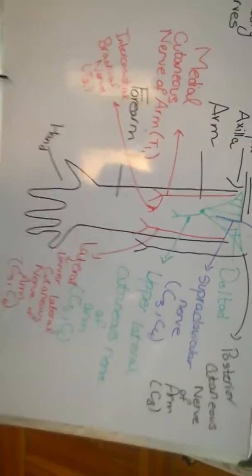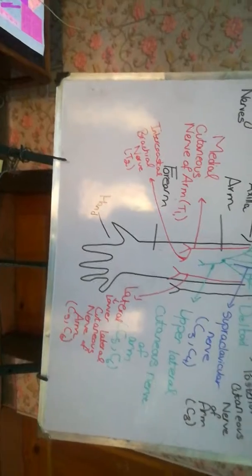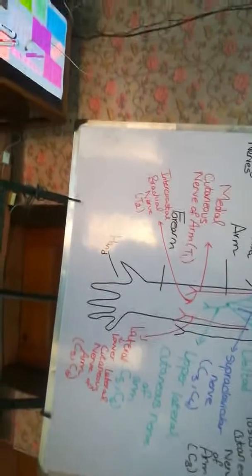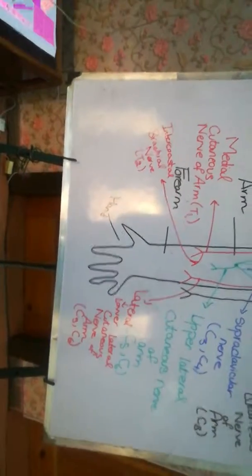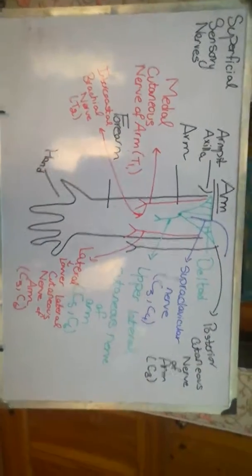So that was all for your superficial sensory nerve supply for your arm and what are the different nerves which are supplying the different regions of the arm. I hope it's understood. Thank you.